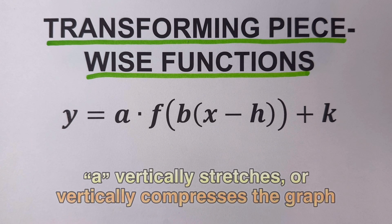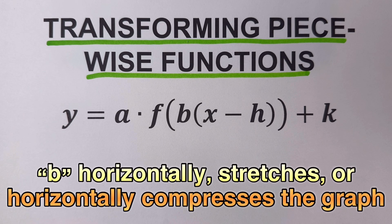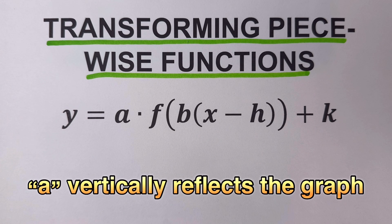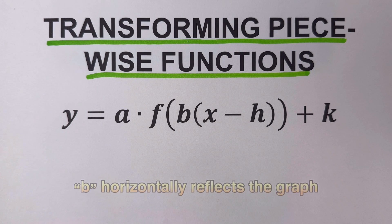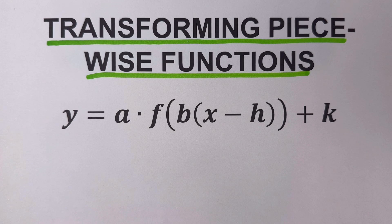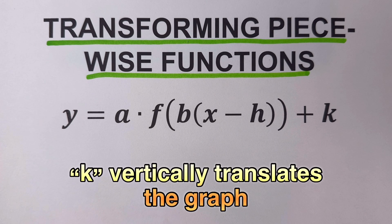The parameter a vertically stretches or compresses the graph, while the parameter b horizontally stretches or compresses the graph. The parameter a also vertically reflects the graph — either flipping it upside down — while b reflects the graph horizontally, side to side. The parameter h horizontally translates the graph, while k vertically translates the graph.